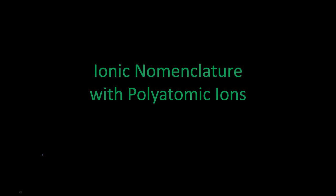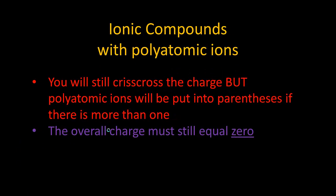We're going to talk about ionic nomenclature with polyatomics. We've talked about simple ionics and transition metal ionics. Now we're going to talk about polyatomic ions — poly means more than one, atomic means atoms, so this means more than one atom in an ion. The first thing you're still going to do is crisscross the charge, but the polyatomic ion will be put into parentheses if there's more than one. The overall charge must still equal zero, as it does in all ionic compounds.